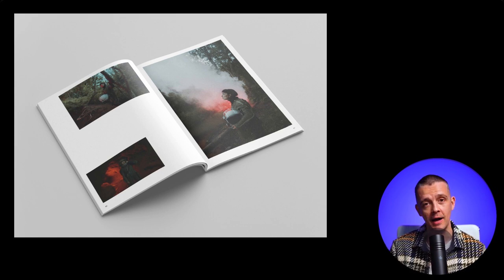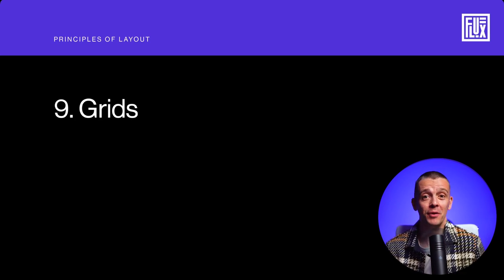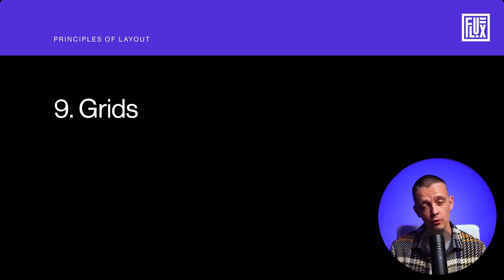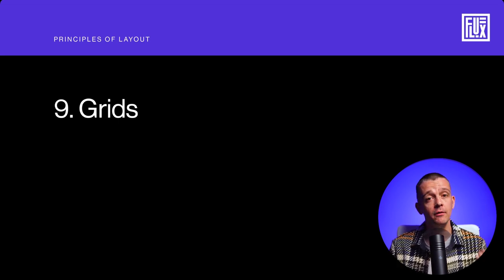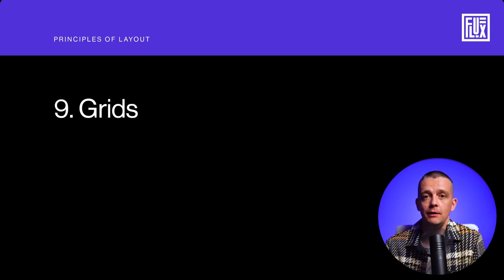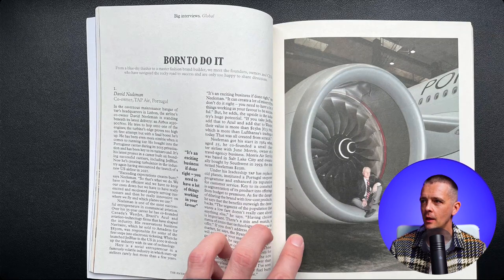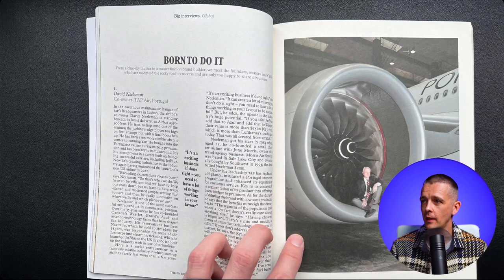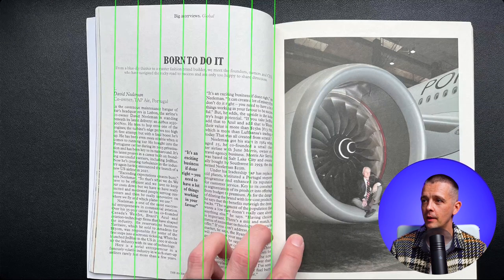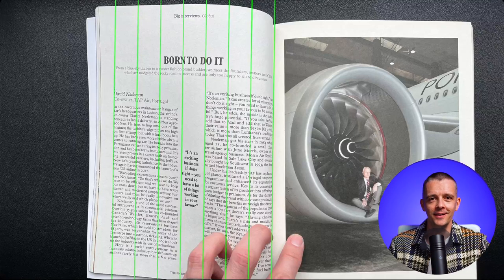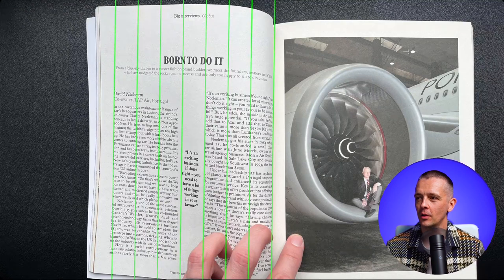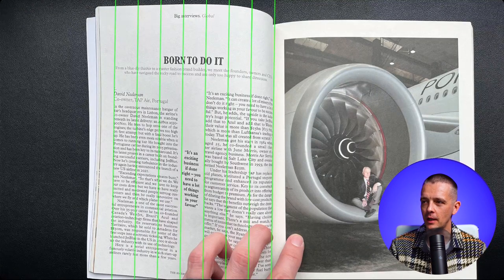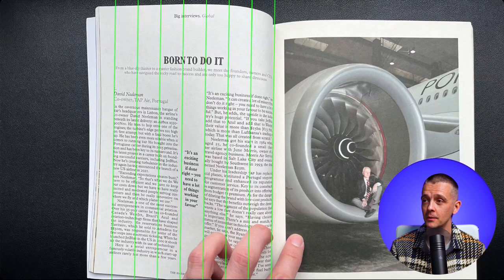This layout was created using our final principle — number nine: grids. Command of the grid allows you to achieve all of the above. It's the most useful tool for the designer who wishes to produce an effective layout. The structure creates order and conveys confidence in your work. I grabbed another magazine from the studio, and you can see a grid layout on display. On the right, we have a full-page image; on the left page, we have the type. Overlaid roughly, you can see there's a seven-column grid, where each column of type spans over three columns — three and three — with a little boxout caption in the center, which has been center-aligned.